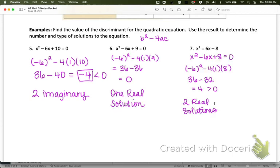For number 6, you should get 0, and that tells us there's one real solution. For number 7, we should get 4, which is greater than 0, so that tells us there are two real solutions.